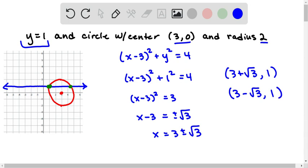And if we approximate those, 3 + √3 is approximately 4.7, so that would be this point over here. And 3 - √3 is approximately 1.3, so that would be this point over there.